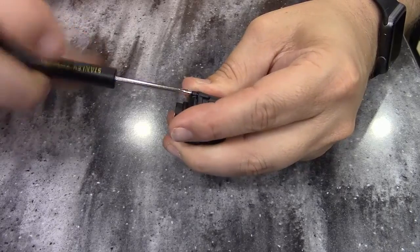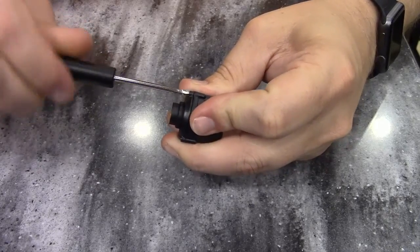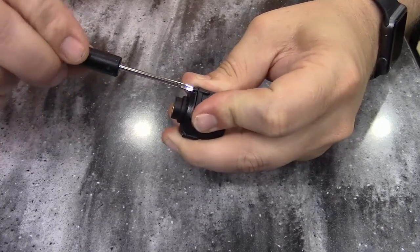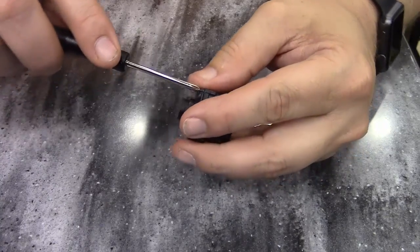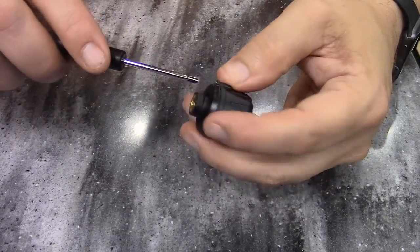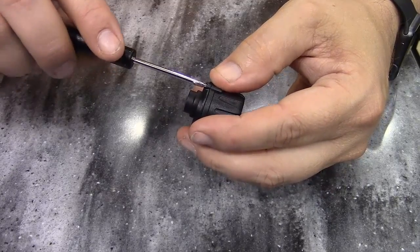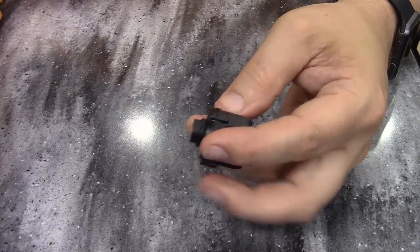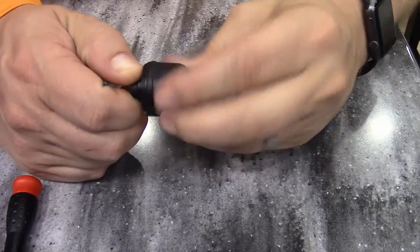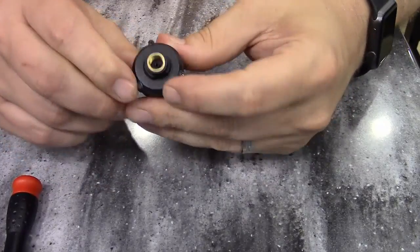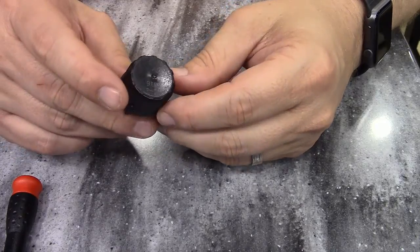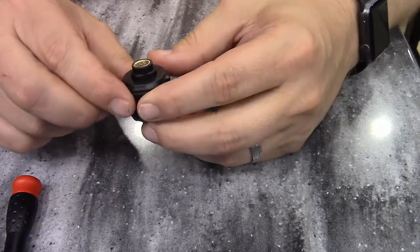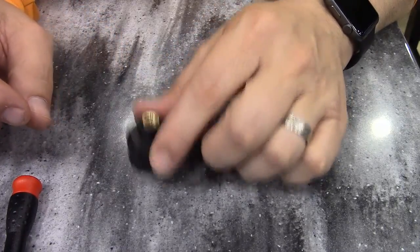So again, CR1632 battery. And just make sure each one of these is snug. You don't want to strip them out, you just want to make sure they're good and tight. There you go. Now you can see the anti-theft device is in good working order there. So there you have it. The TST-507 system cap sensor battery change. And nothing to it.